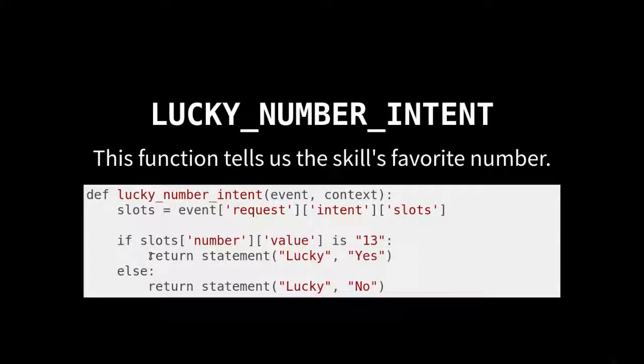Lucky number intent, this function tells us the skill's favorite number. This skill that we are making, or this aspect of the skill, the lucky number intent, only thinks that number 13 is lucky. It's going to go into that dictionary, that JSON object. As I said earlier, those JSON objects get turned into dictionaries. What we're going to do is extract that slot just so it's easier to see. It's more readable.